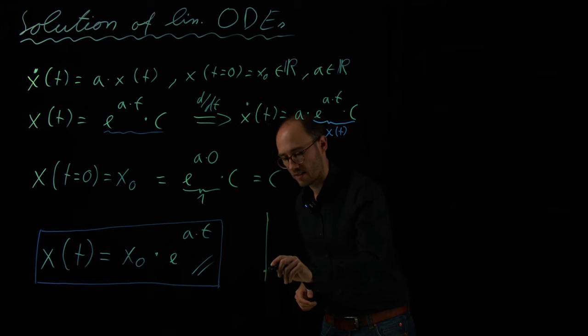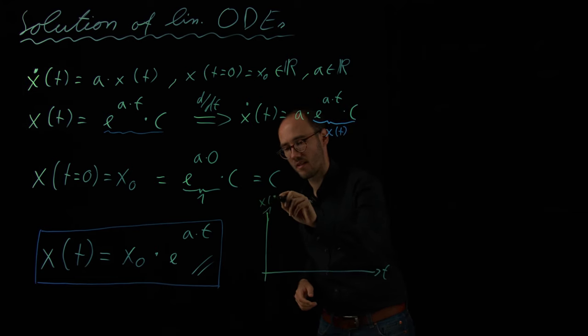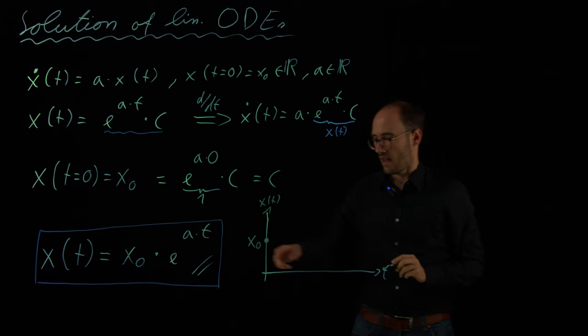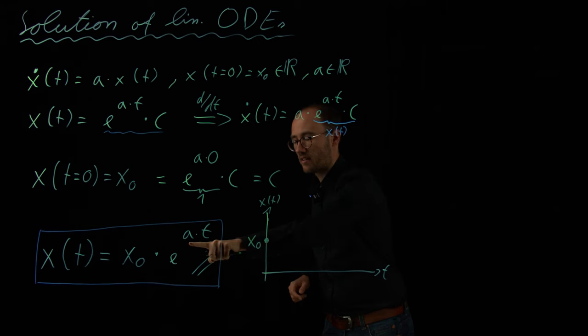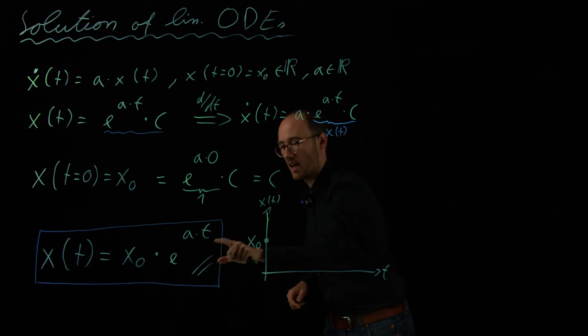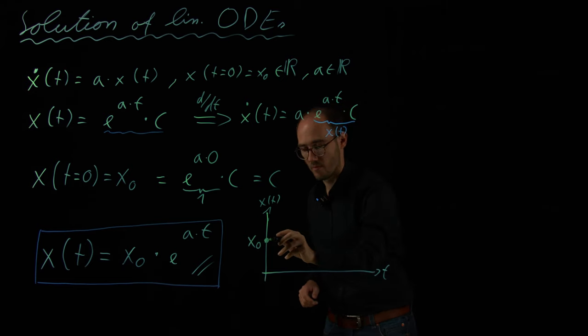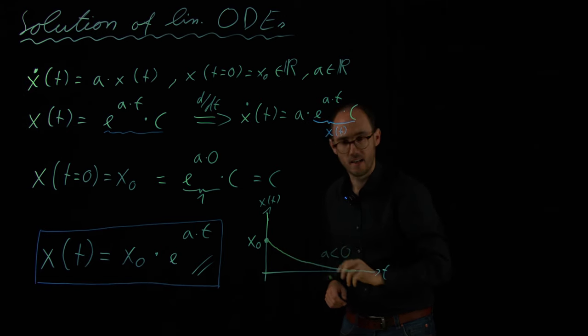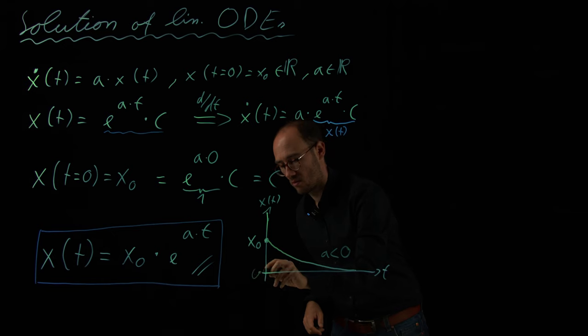So, I'm doing a little sketch here. This is t and that is x of t or state. And we just consider some arbitrary x zero like this. And now, let's discuss several cases regarding A. One case could be that A is a negative real number. So, in this case, this would become a negative exponent and, of course, this would basically decay to zero. So, this would be the classical case for A being a negative number. So, we therefore have a decaying process which tends to zero.